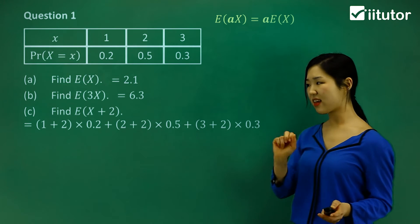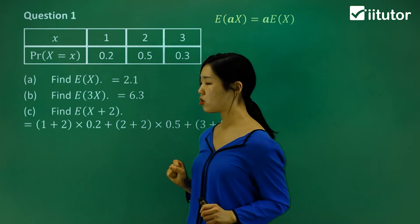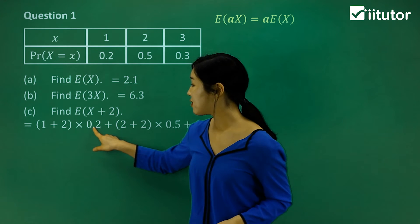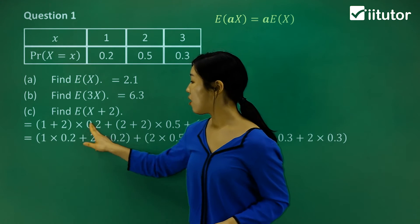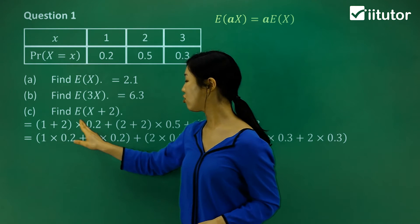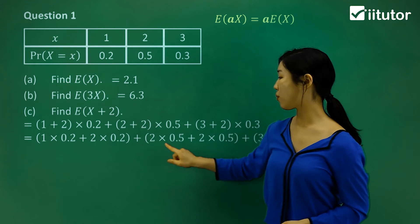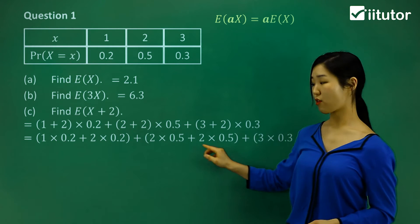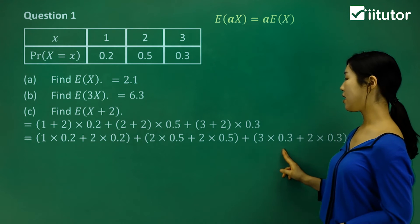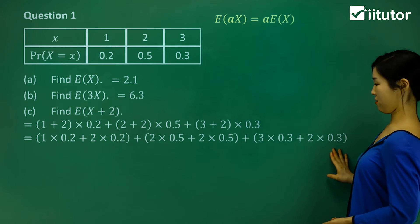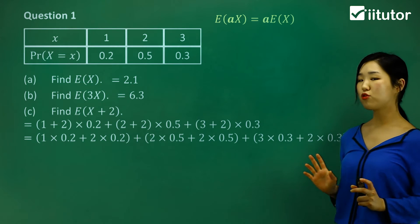Instead of just calculating it, I'll do a little expansion. I multiply the probability through each bracket: 1 times 0.2 plus 2 times 0.2, then 2 times 0.5 plus 2 times 0.5, then 3 times 0.3 plus 2 times 0.3. After expanding, I do a rearrangement, grouping the variable terms together: 1 times 0.2, plus 2 times 0.5, plus 3 times 0.3, and then separately the remaining terms.